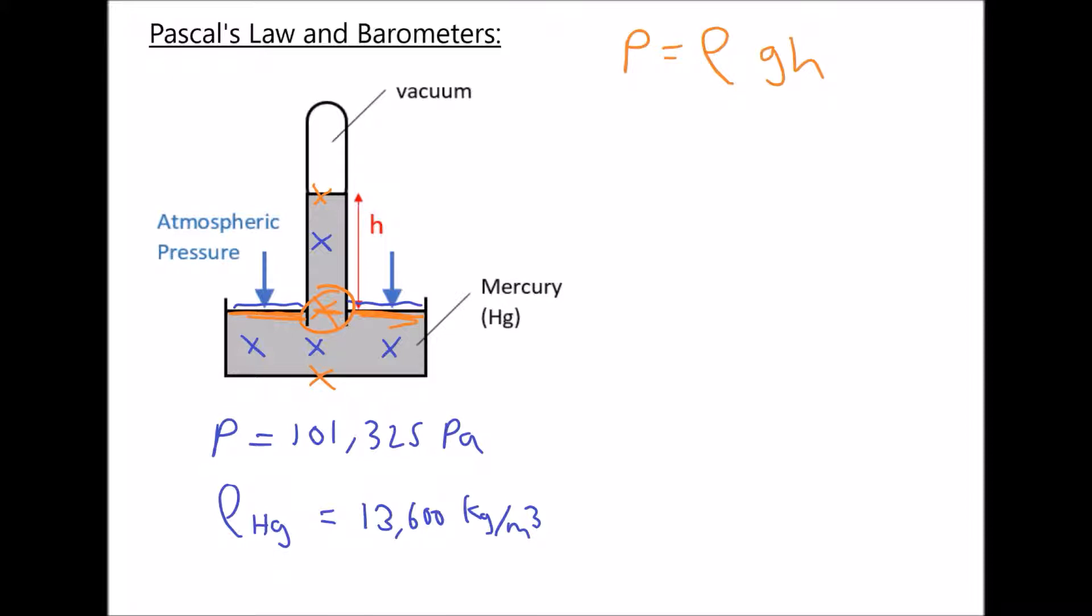Now using a mercury filled barometer, a typical height would be somewhere in the order of 0.75 meters or 75 centimeters. So if we apply our formula,